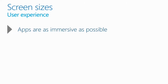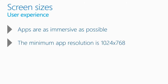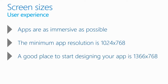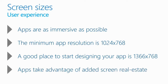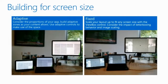With screen size, you want apps to be as immersive as possible. The minimum app resolution you need to support is 1024 by 768. At that resolution, snapping is not supported, so your app will only be that size and users will never be able to snap a second app next to it. You should really aim for 1366 by 768, the minimum screen resolution needed for snapping to be available. When there's no snapping, that's the size your app will be.